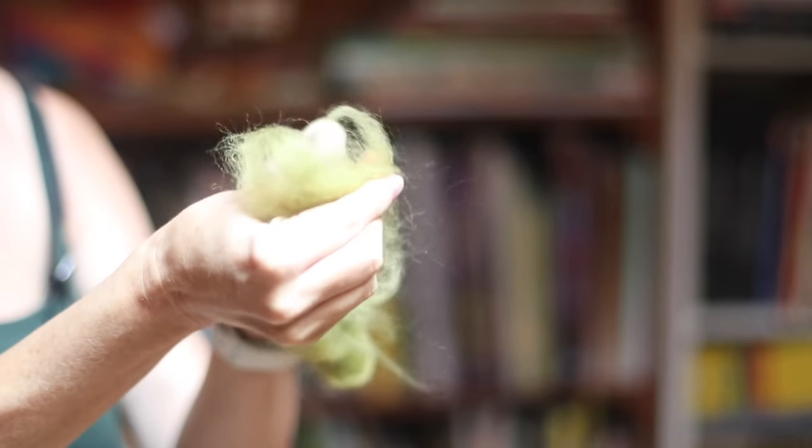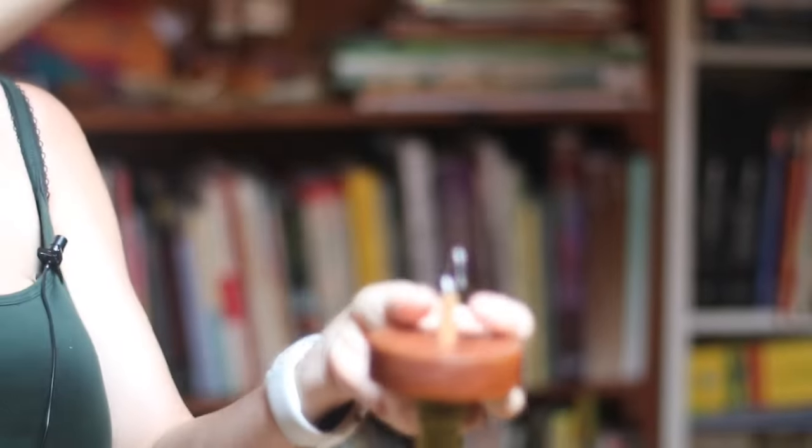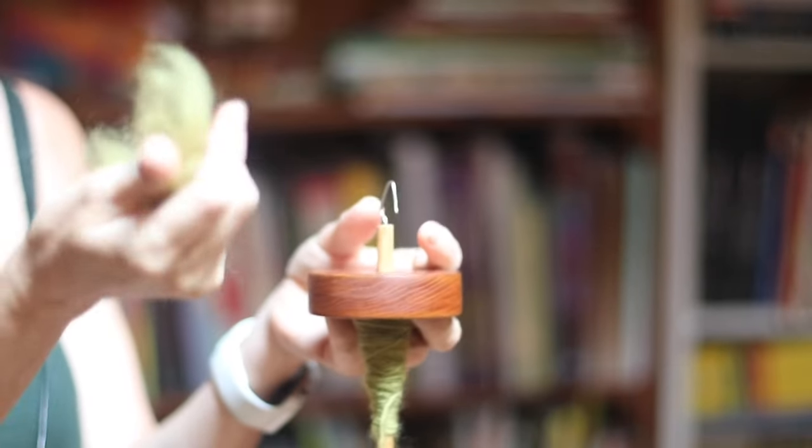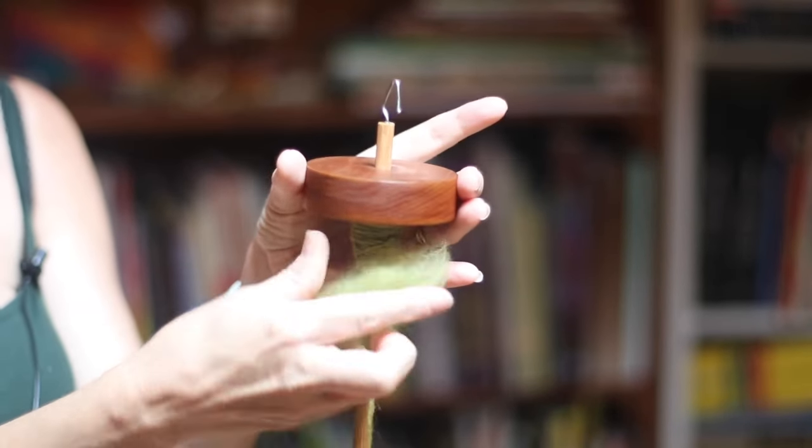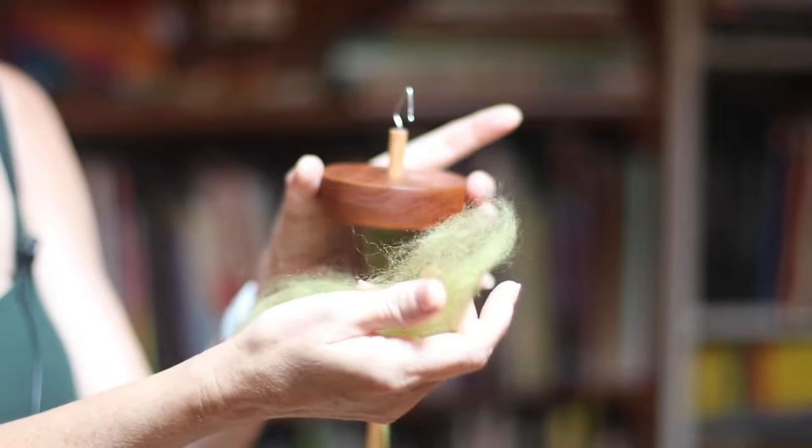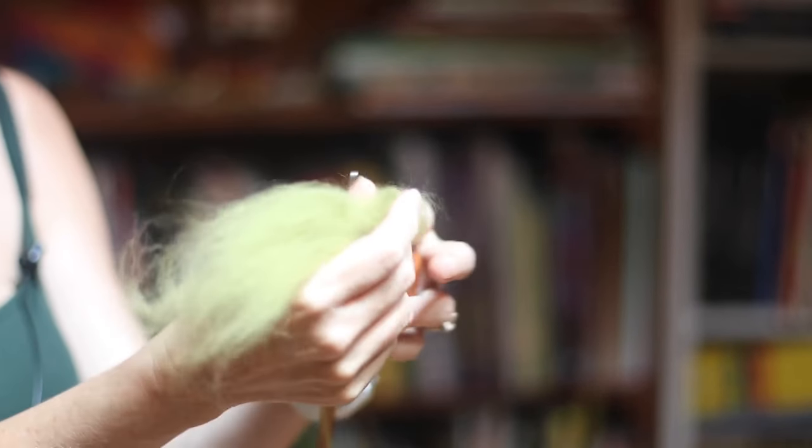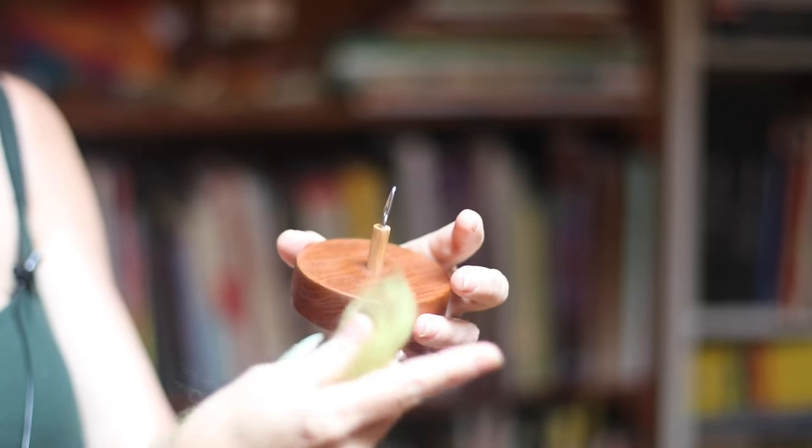I'm going to take some roving first. Now we're going to feed it in, so one hand is going from the top and one hand is going from the bottom. I have been told that I do mine a little bit differently. I've seen people hold it like this, and also I see a lot of right-hand dominated people.